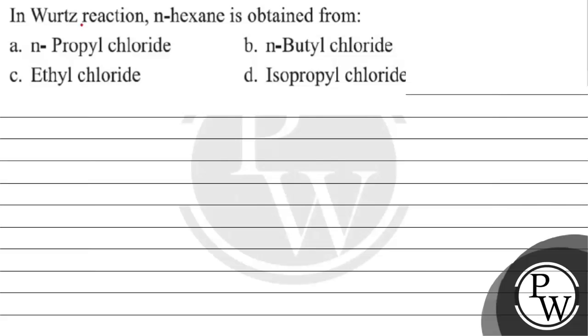Hello, let's read this question. The question says, in which reaction N-hexane is obtained from option A, N-propyl chloride, option B, N-butyl chloride, option C, ethyl chloride, option D, isopropyl chloride.